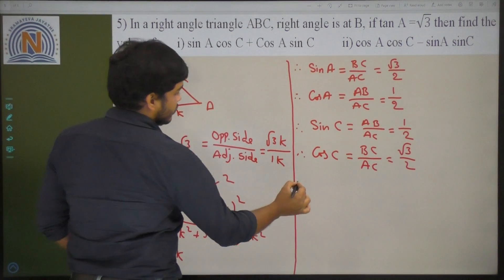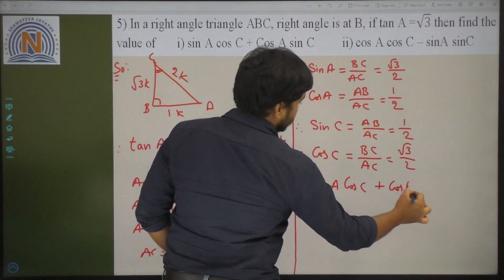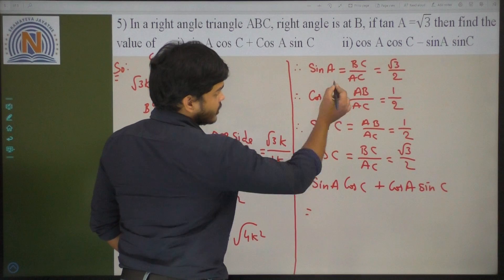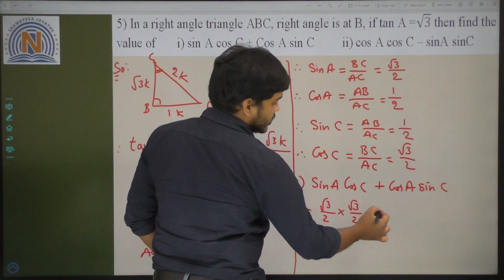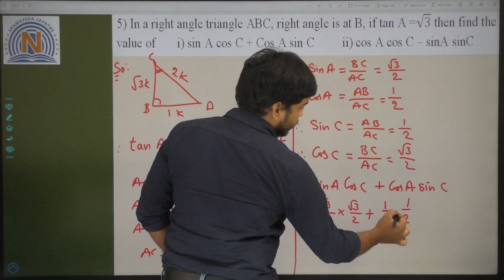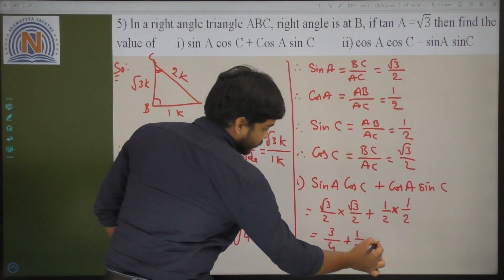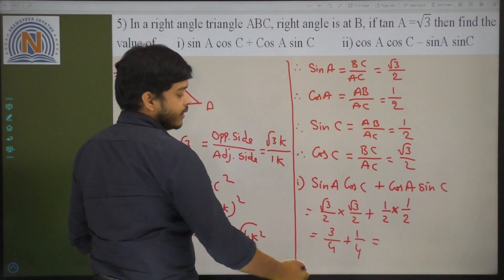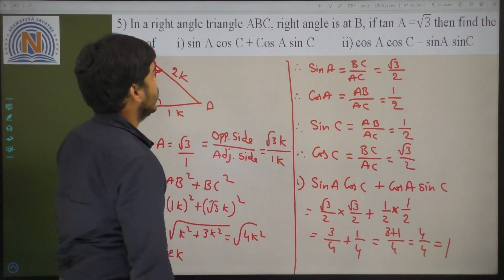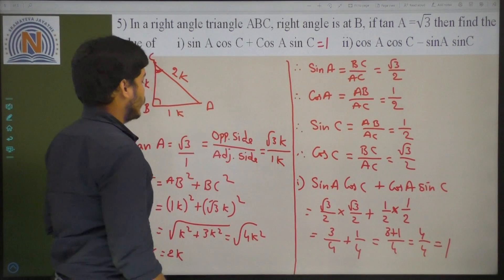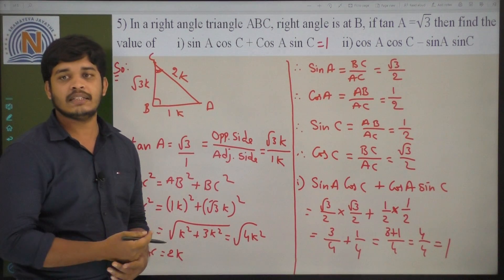First we need to calculate sin A cos C plus cos A sin C. Sin A value is root 3 by 2, into cos C value root 3 by 2, plus cos A value 1 by 2, into sin C value 1 by 2. Root 3 into root 3 is 3, by 2 into 2 is 4, plus 1 by 4. Since denominators are equal, we add numerators directly: 3 plus 1 by 4 equals 4 by 4, which equals 1. So when tan A equals root 3, sin A cos C plus cos A sin C equals 1.